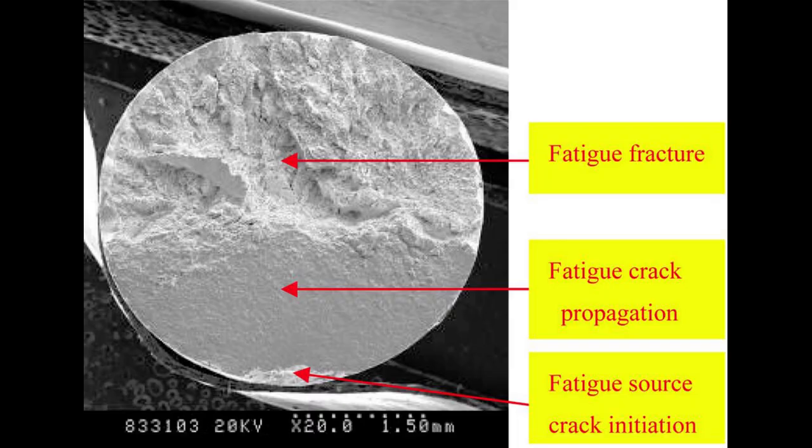I don't know the history of this specimen but it's quite clear that the crack front was a straight line as it advanced across the cross-sectional area. In this case it would have been a simple bending load.